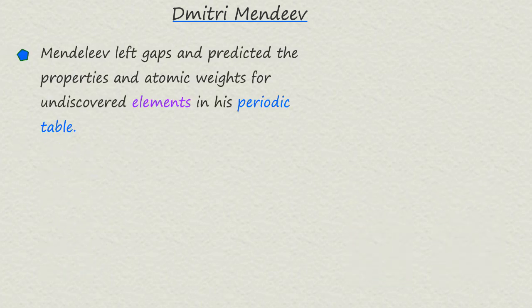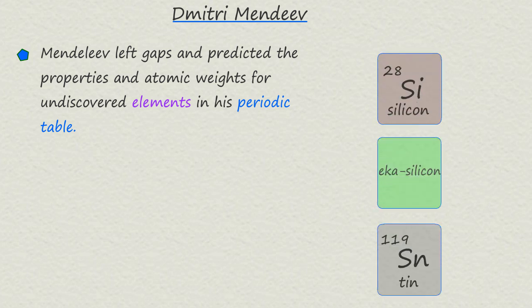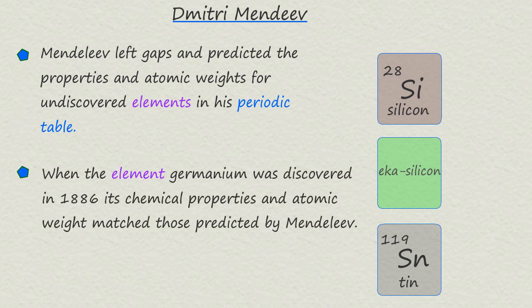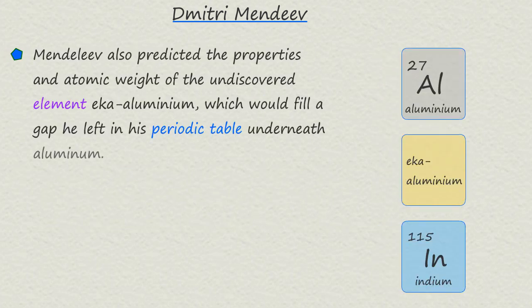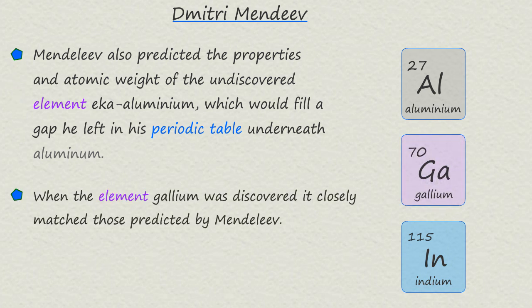Perhaps one of Mendeleev's key insights was his willingness to leave gaps in his periodic table for elements which he believed had not yet been discovered. Not only did he leave gaps for these undiscovered elements, but he made predictions about the properties of these missing elements based on the patterns he observed. For example, Mendeleev predicted the properties and atomic weight of an element he called eka-silicon, which would fill the gap underneath silicon. He also predicted the existence of an element he called eka-aluminium, which would fill the gap underneath aluminium. When gallium was discovered and its properties closely matched Mendeleev's predictions, it was obvious that Mendeleev was on the right track with his periodic table.